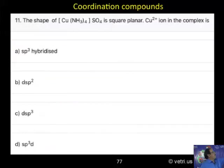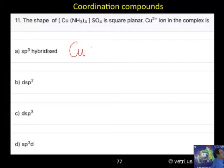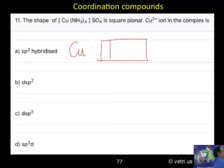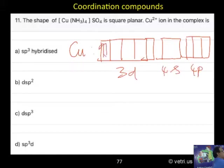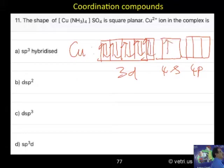You might wonder why it is sp3. Kindly follow. Copper's electronic configuration is 3d10, 4s1. Then there is 4p as well. So the configuration is 3d10, 4s1, 4p.